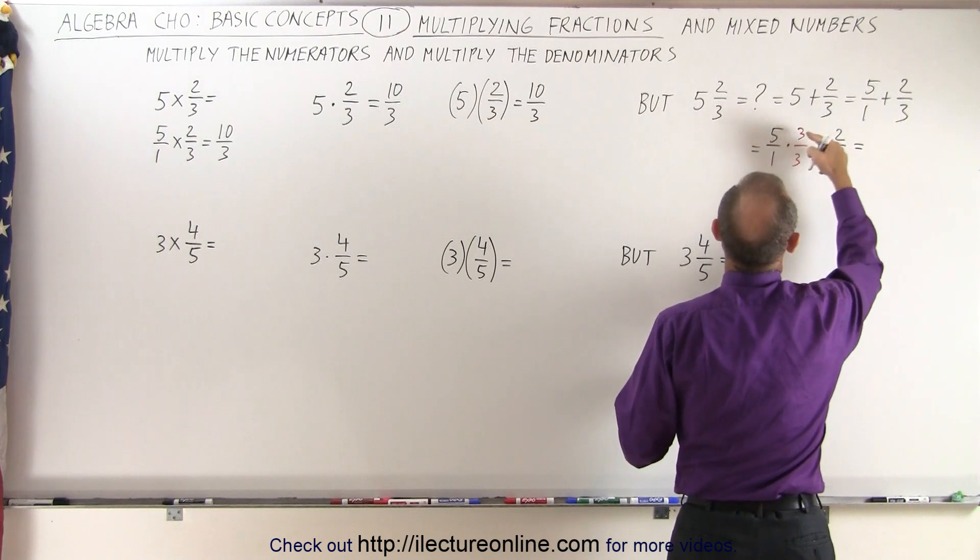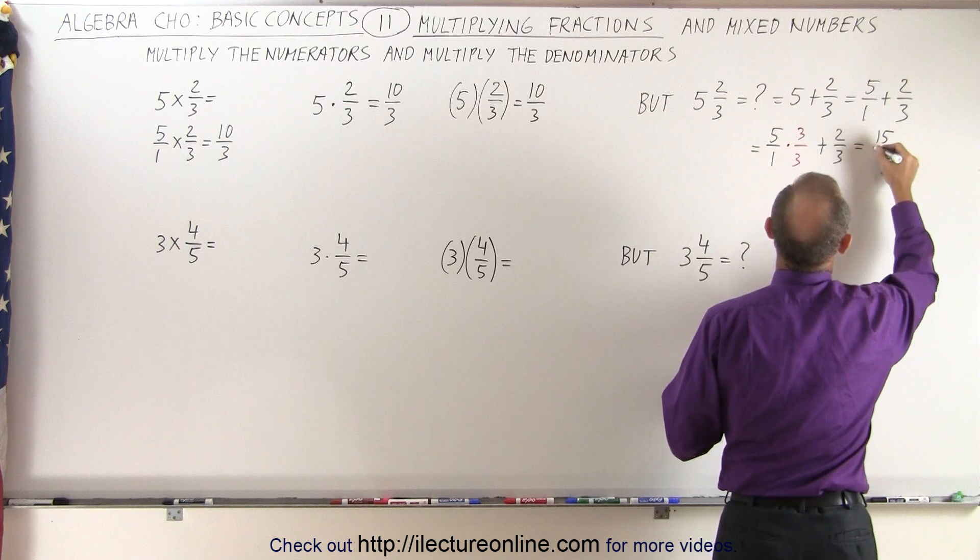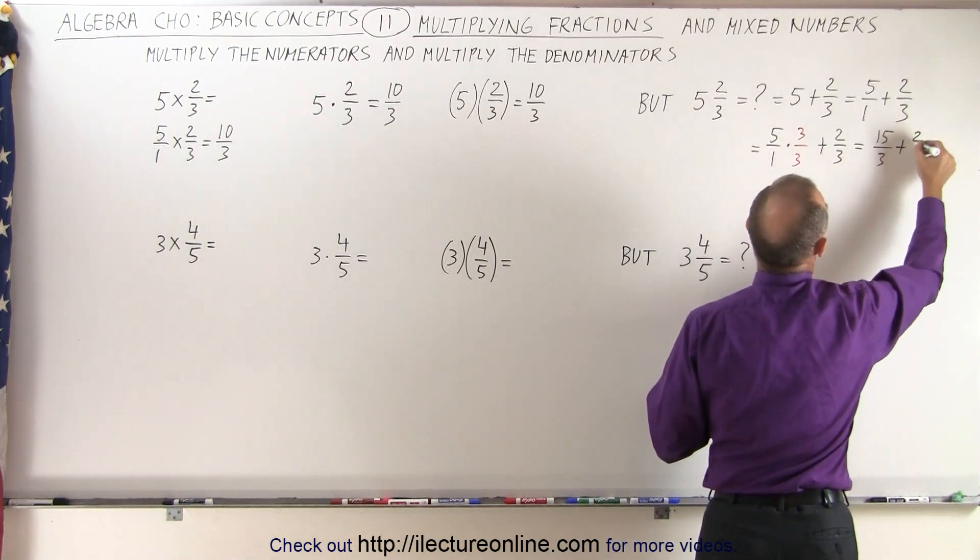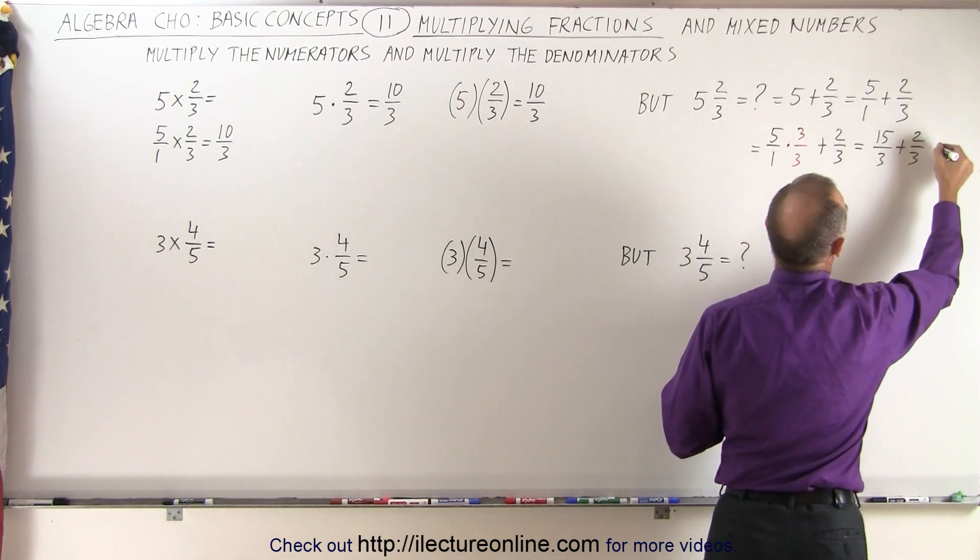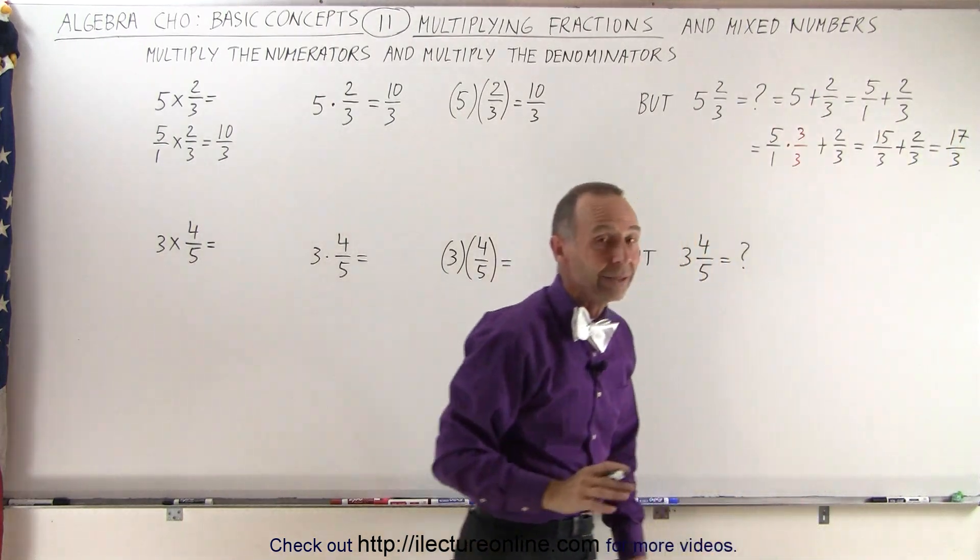Then you see that 5 times 3 which is 15, divided by 1 times 3 which is 3, so now we're multiplying these together and then we add that to 2 over 3. And notice since they're now over the same denominator, I can simply add the numerators, which is 17 over 3, and we'll see more examples of that later.